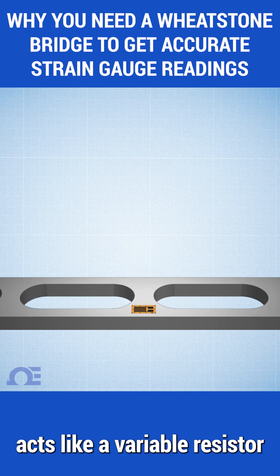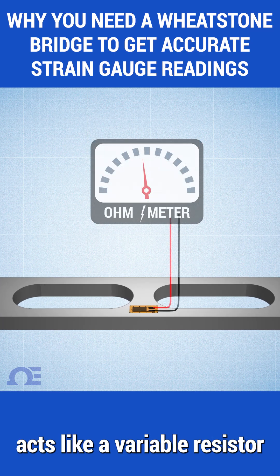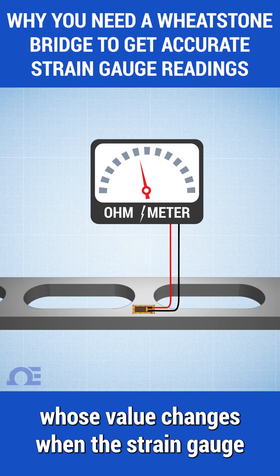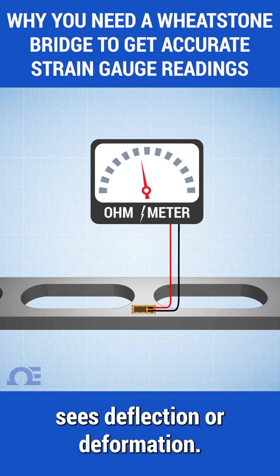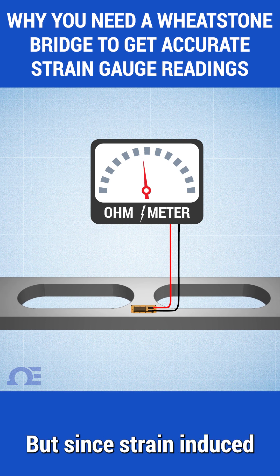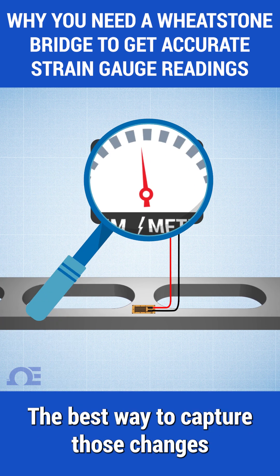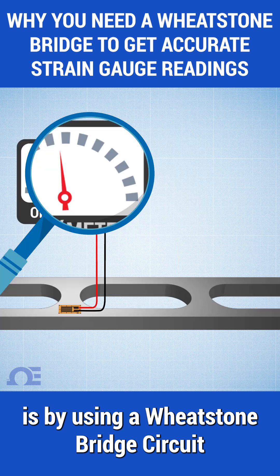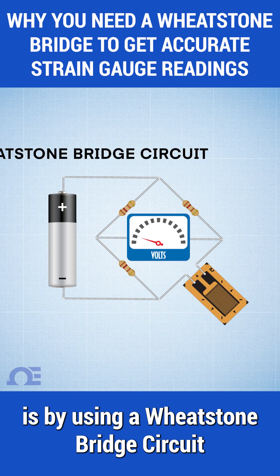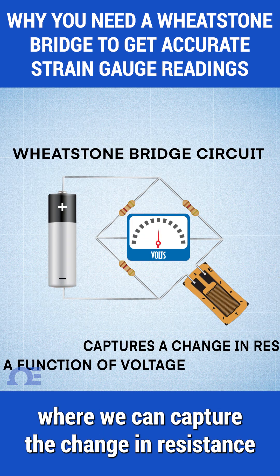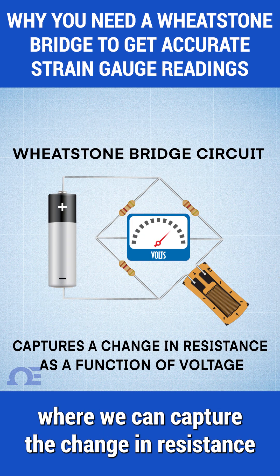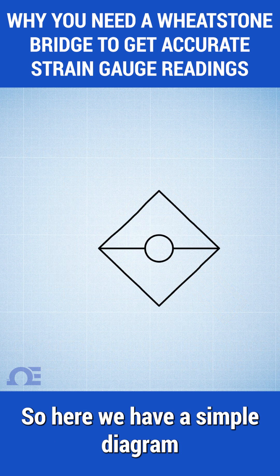A strain gauge by itself acts like a variable resistor whose value changes when the strain gauge sees deflection or deformation. But since strain-induced resistance changes are extremely small, the best way to capture those changes is by using a Wheatstone bridge circuit, where we can capture the change in resistance as a function of change in voltage.